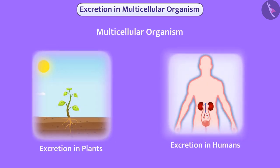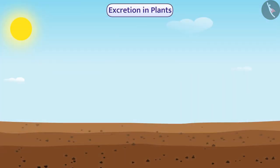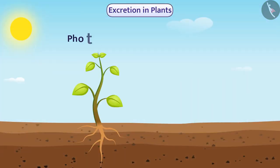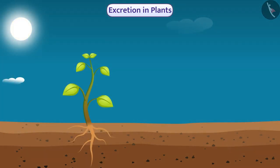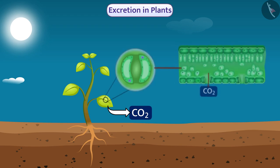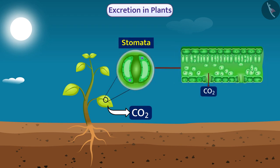Multicellular organisms have specific organs for excretion. In plants, during the process of photosynthesis, waste materials — oxygen and water — get produced. There is no photosynthesis at night, so carbon dioxide is produced as a waste product. These products are removed through stomata present in the leaves.